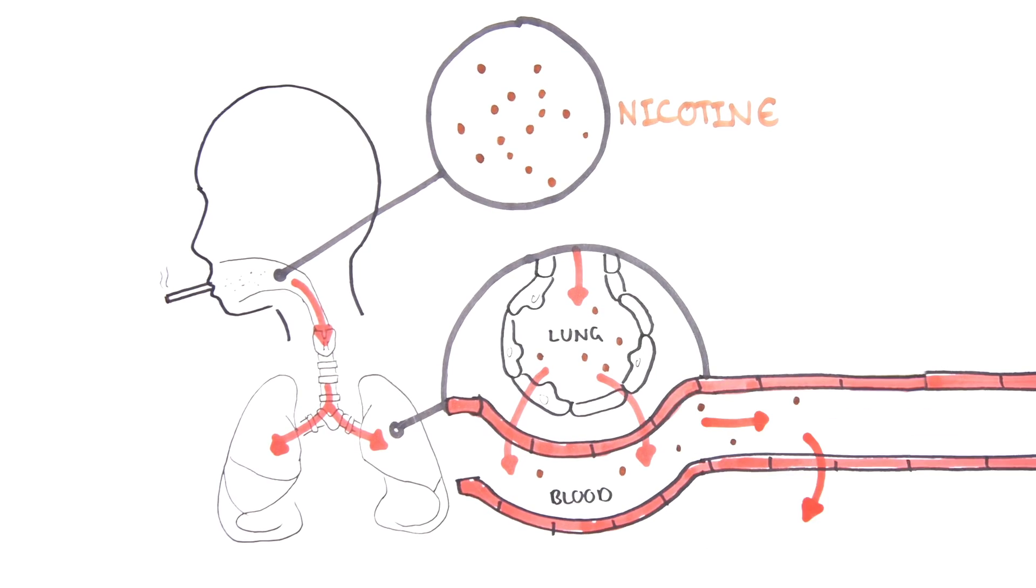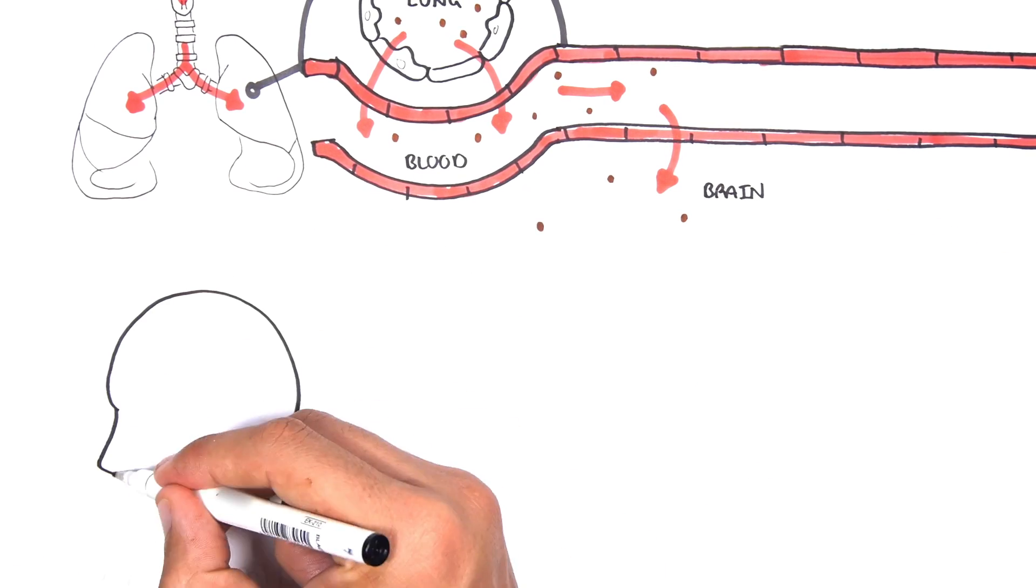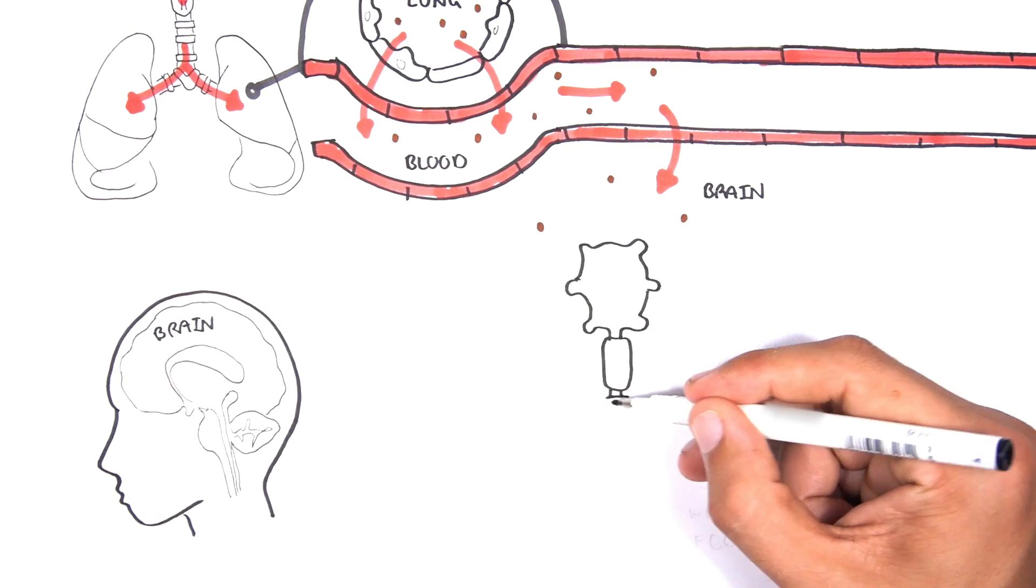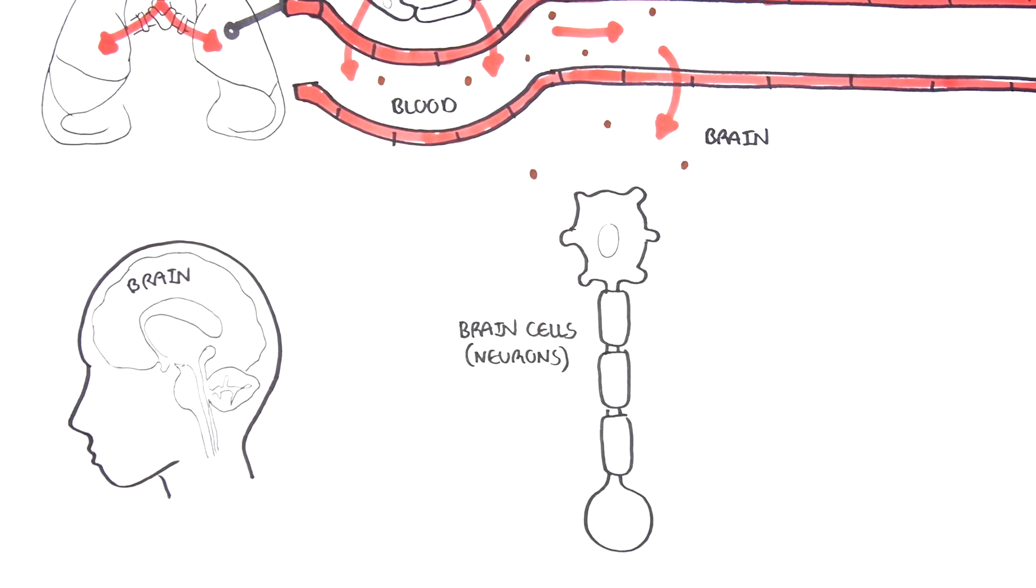Nicotine reaches your brain fast. In less than 10 seconds it travels from your lungs into the bloodstream and then into your brain. The brain is made up of many cells called neurons.